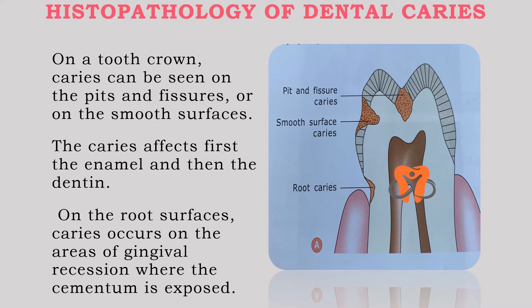On a tooth crown, caries can be seen in the pits and fissures or on the smooth surfaces. This caries affects first the enamel and then proceeds to the dentine. On the root surfaces, areas exposed by gingival recession get attacked by caries — here, first the cementum is affected and then the dentine gets involved.